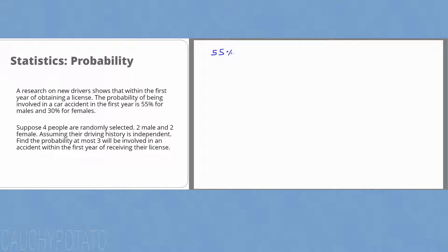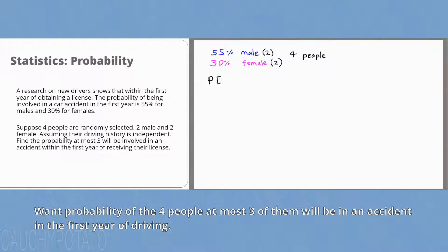So we have 55% male and there's two of them, 30% female and there's two of them as well. There's four people total, so we want the probability at most three of the four people will be in an accident during the year.